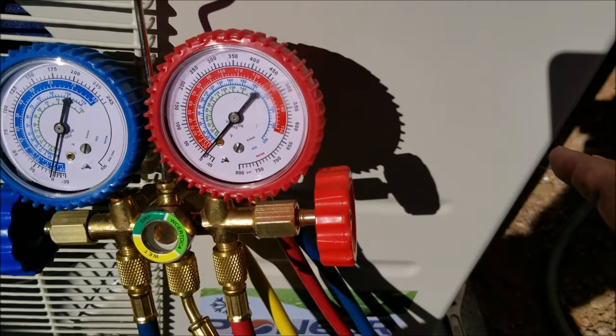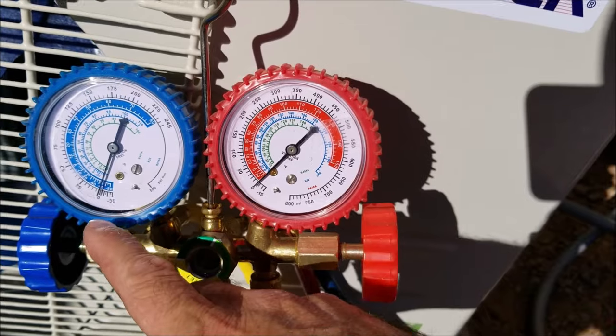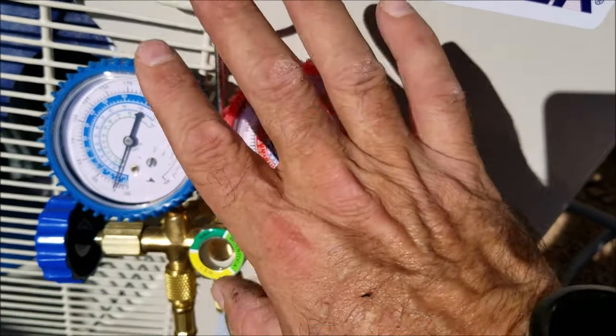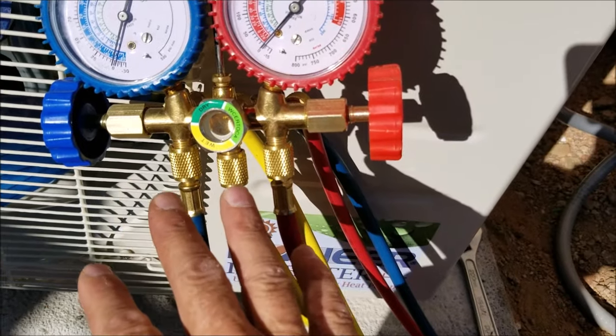Basically we're just going to set the whole line set into a vacuum. We've got to make sure it holds, and as long as it holds there's no leaks. We're just going to be using this low pressure blue side. We're not even going to be using this side over here, and it's going to go through the center to the vacuum pump.